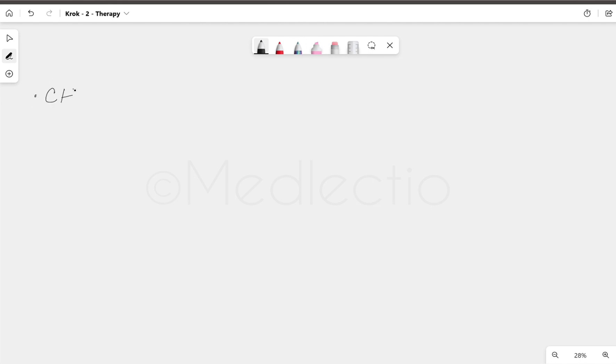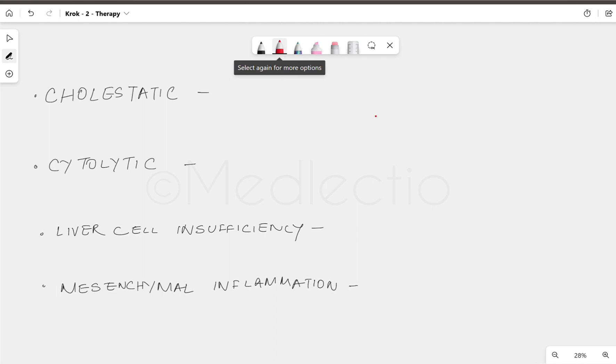First one is cholestatic, then cytolytic, then liver cell insufficiency, and the last one is mesenchymal inflammation. Let's discuss them one by one.